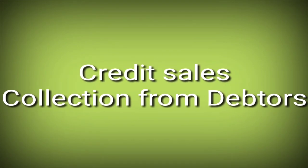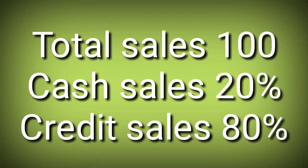Credit sales are also called collection from debtors — that is a key term. For example, if total sales are $100 and cash sales are $20, then the remaining balance of $80 will be your credit sales. The adjustment is always on the credit sales, which we refer to as collection from debtors.